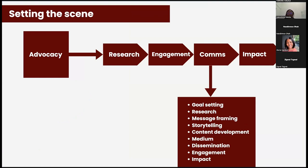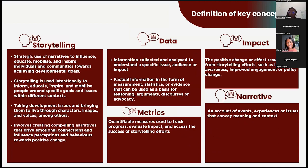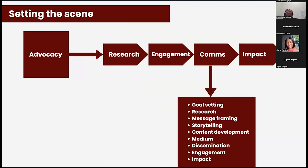I already talked about the value chain — that storytelling does not work by itself, we need other elements of advocacy to support it. I spoke about research, engagement, comms, and impact. This is the context and the framework. It's a very simple framework, I'm just trying to help you paint a picture of how things flow when it comes to advocating or spotlighting development issues, and how you begin to think about the internal value chain that helps you tell a good story.